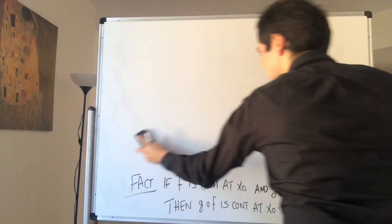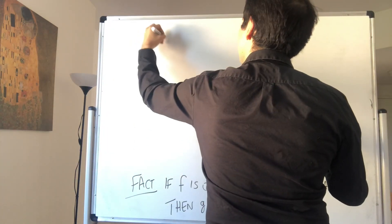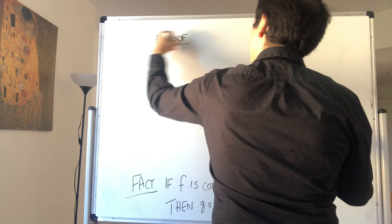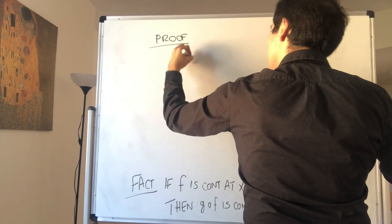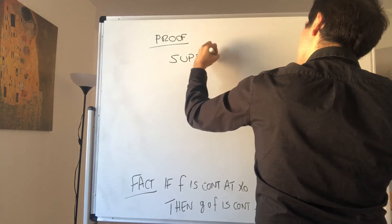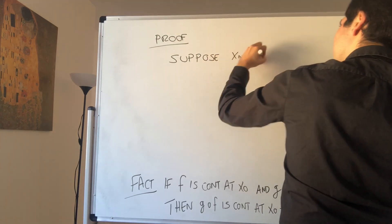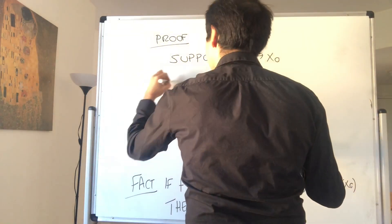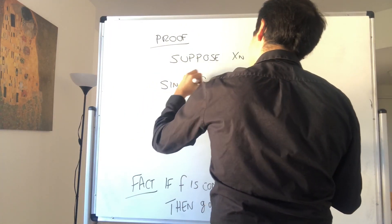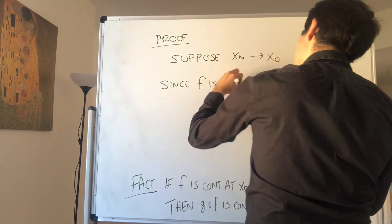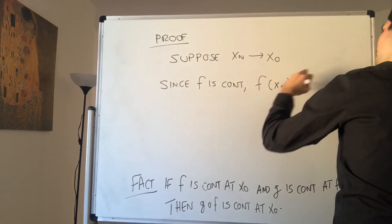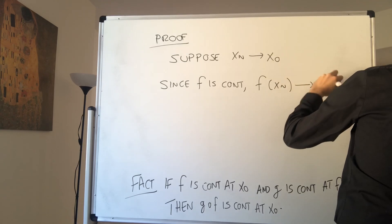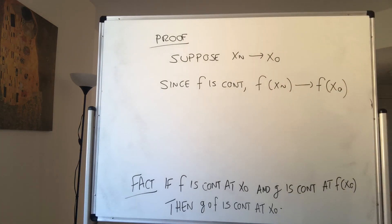Let me first do the sequence way. Proof one, with sequences. Suppose x_n converges to x naught. Then since f is continuous, we know that f of x_n converges to f of x naught.